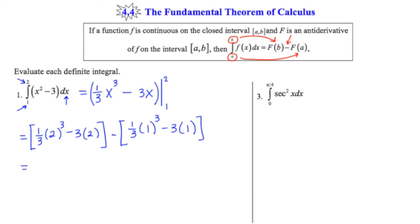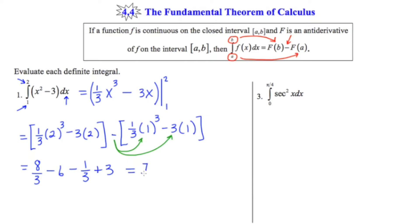So now let's clean this up. We end up getting 8 thirds minus 6 minus 1 third plus 3. Now I want to caution you that because there's a negative here, and this is multi-termed, we have to think about distributing that negative through each of the terms. And that's why we ended up with a plus 3 at the end here. Cleaning this up a little bit further, we end up getting 8 thirds minus 1 third, which is 7 thirds. And we have negative 6 plus 3, which is minus 3. I can think of that minus 3 as minus 9 thirds, and when I'm finally done, I get an overall answer of negative 2 thirds.